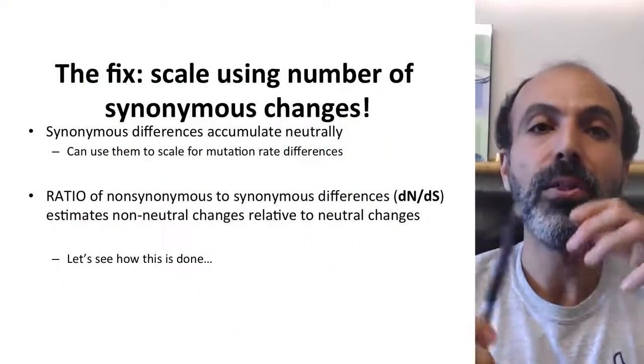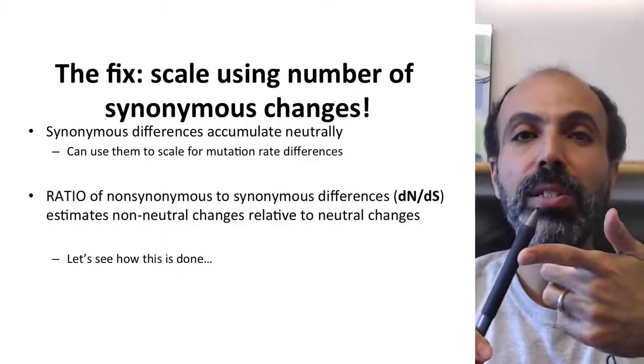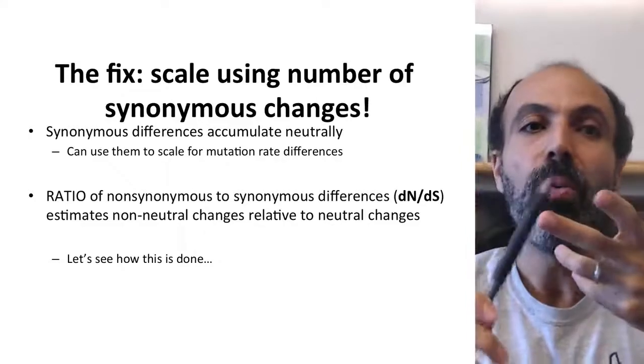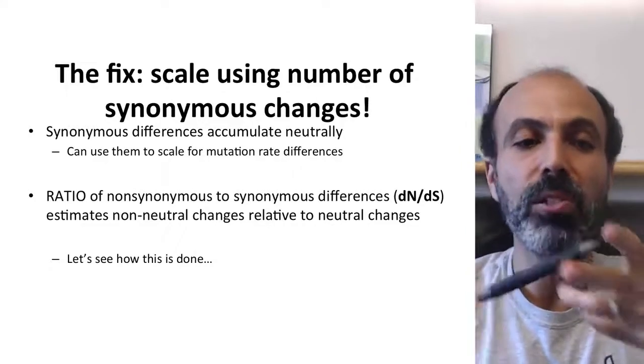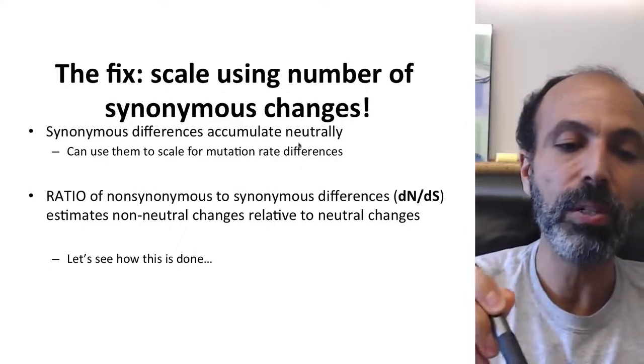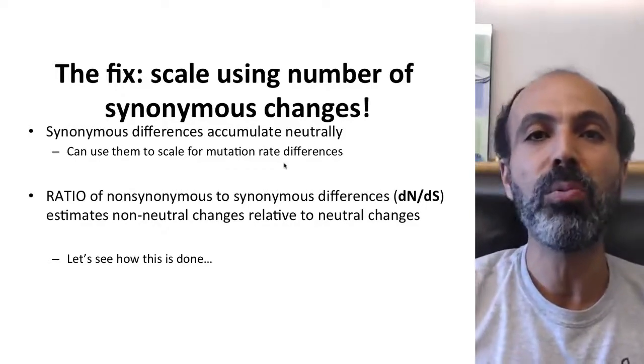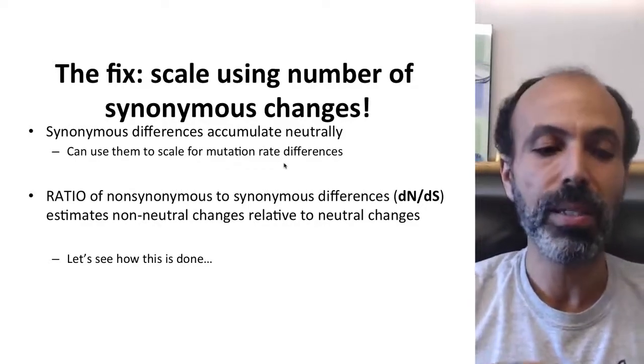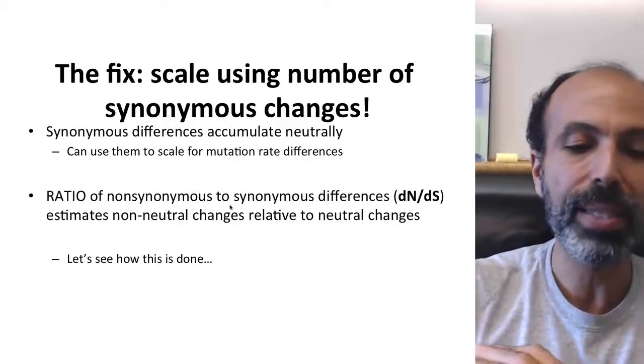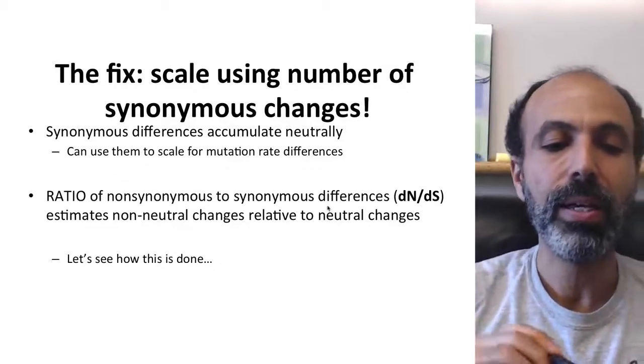So what we do when we're trying to infer the action of natural selection is to try to scale the number of non-synonymous changes, which is sort of the experimental group, with the number of synonymous changes. These are the ones that are thought to accumulate neutrally. So again, we can use them to scale for possible mutation rate differences at different genes. So we're looking for the ratio of non-synonymous to synonymous differences to estimate this.